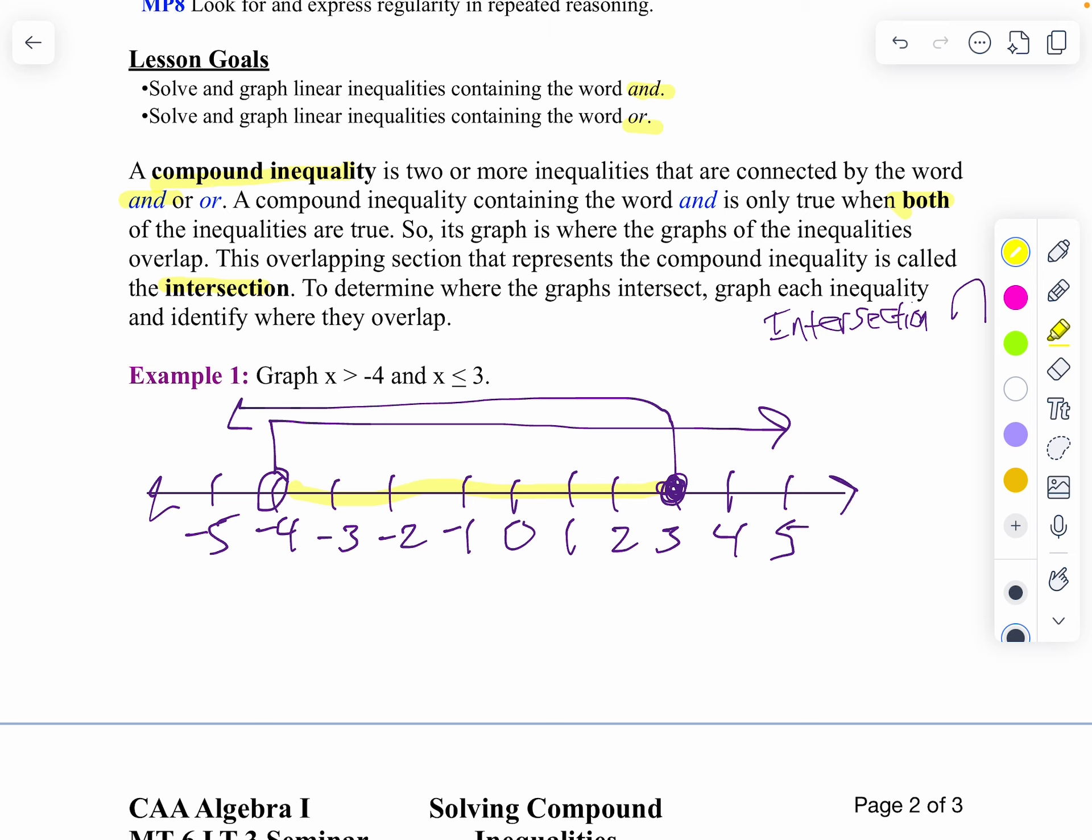Notice what I did is I graphed the first one, then I graphed the second one, then I looked at where they intersect. Sometimes they might intersect in the entire number line. Sometimes they might not intersect at all. That's a no solution problem.